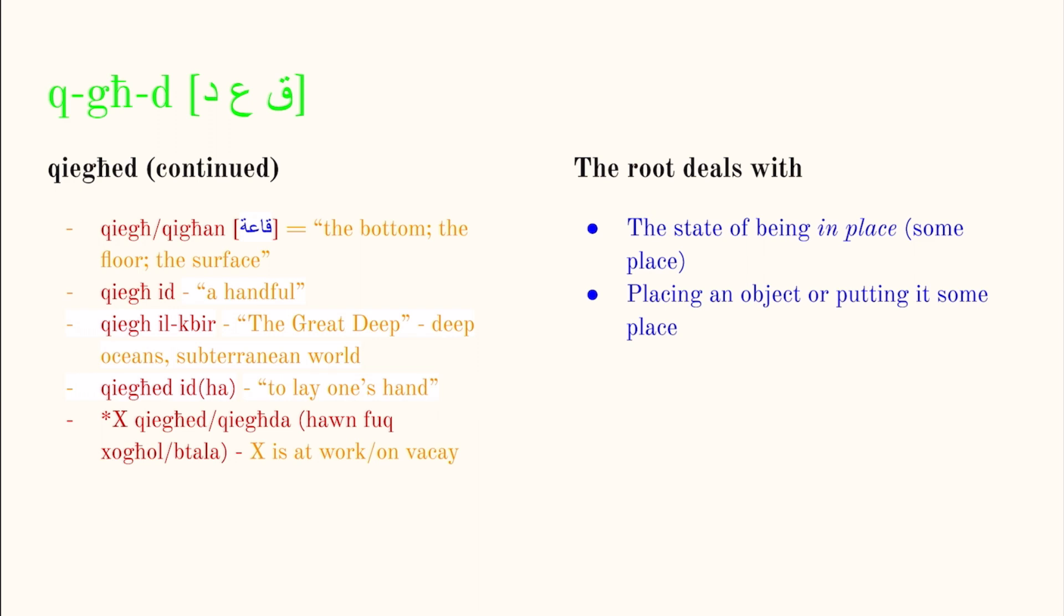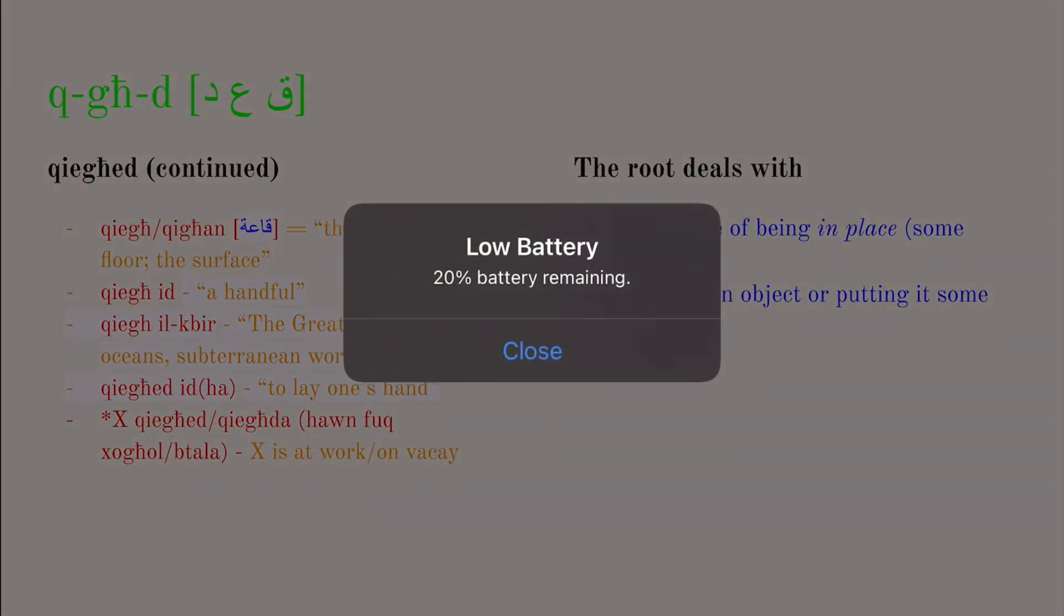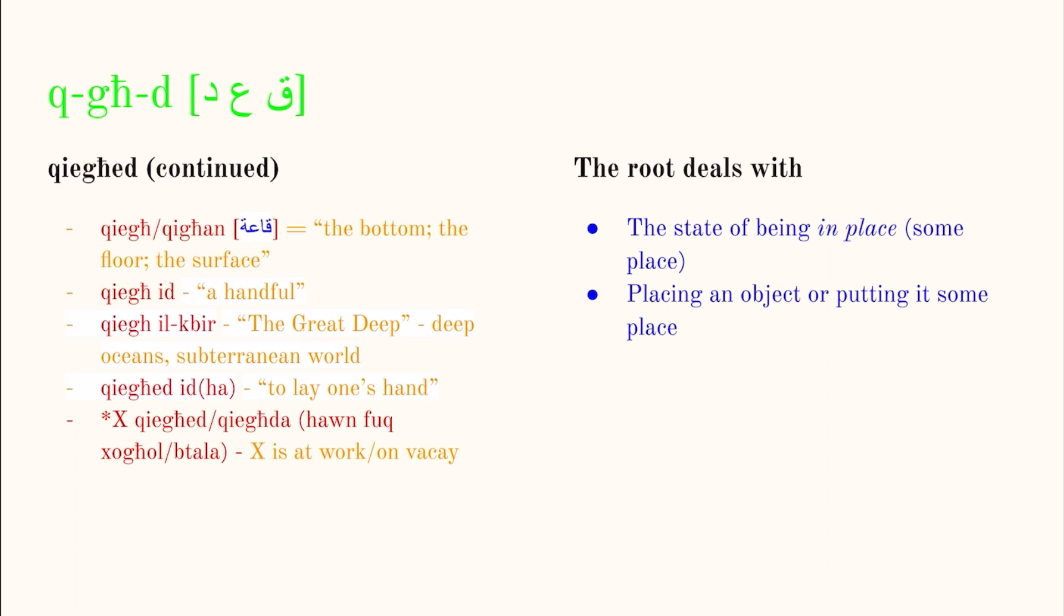And then we have another one which I'm not even exactly sure where I got this from. According to my notes it means a handful. So qaagh id. So it would be like the surface of a hand. That's literally what it would mean word for word. A handful. So you could say qaagh id ein, ein baar. That would mean like a handful of plums, I believe. And then you have qaagh il kabir. The great deep. That's how it would translate. And the great deep, I believe, is falling into disuse even in the English language. But I found this in the Bible, the Maltese Bible. And this refers to deep oceans or the subterranean world. And then we have qieghed iedah. And you would change this ha to whatever yours is. So if you're placing your hand there, you'd say qieghed iedi, your hand, stuff like that. And it means to lay one's hand. So you lay your hand down on something.